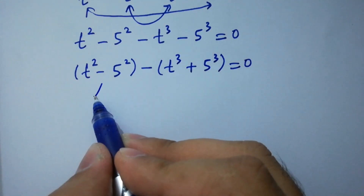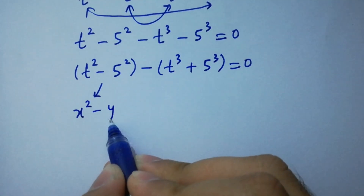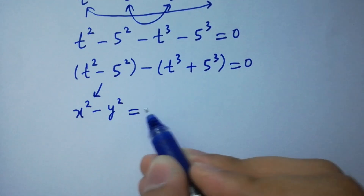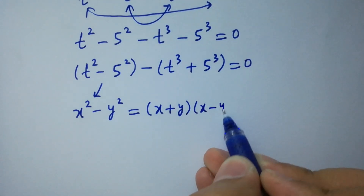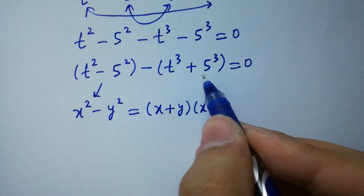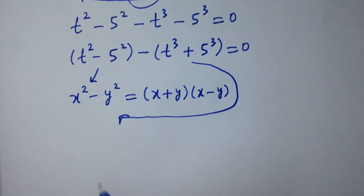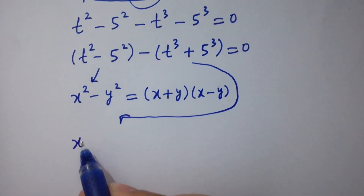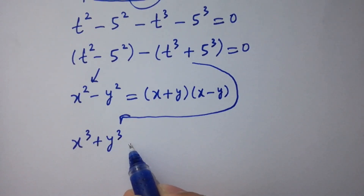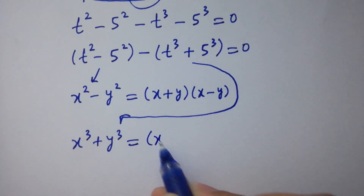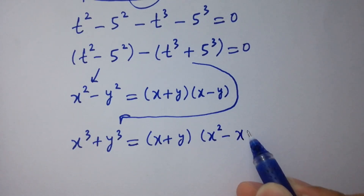Here we know the formula x squared minus y squared, which equals x plus y times x minus y. And here we know the formula x cubed plus y cubed equals x plus y times x squared minus xy plus y squared.